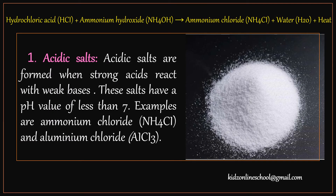Acidic salts are formed when strong acids react with a weak base. These salts have a pH value of less than 7. Examples are ammonium chloride and aluminium chloride. Hydrochloric acid plus ammonium hydroxide gives ammonium chloride plus water plus heat.